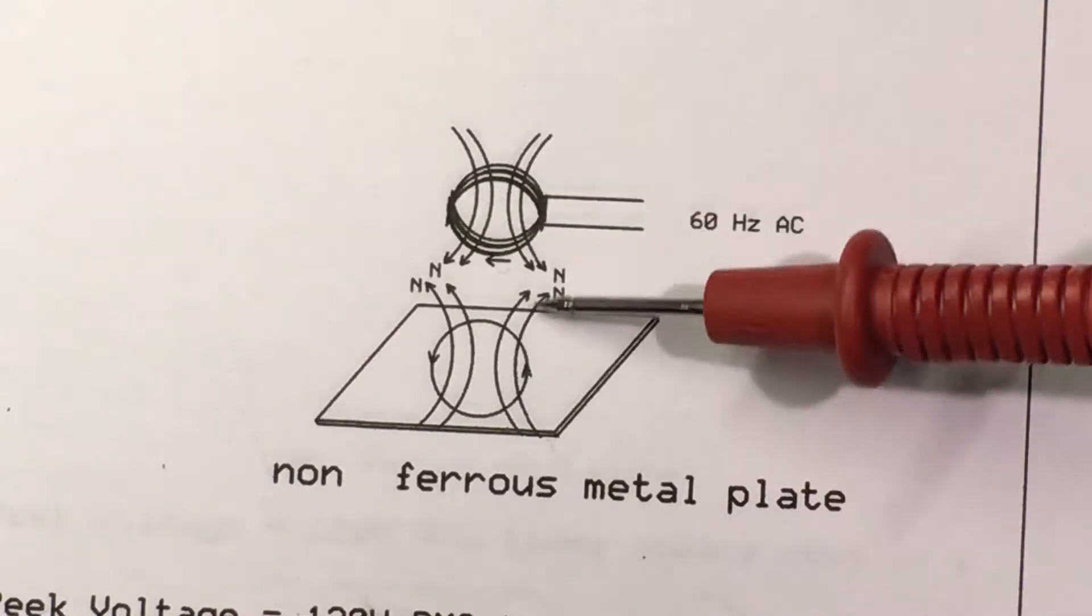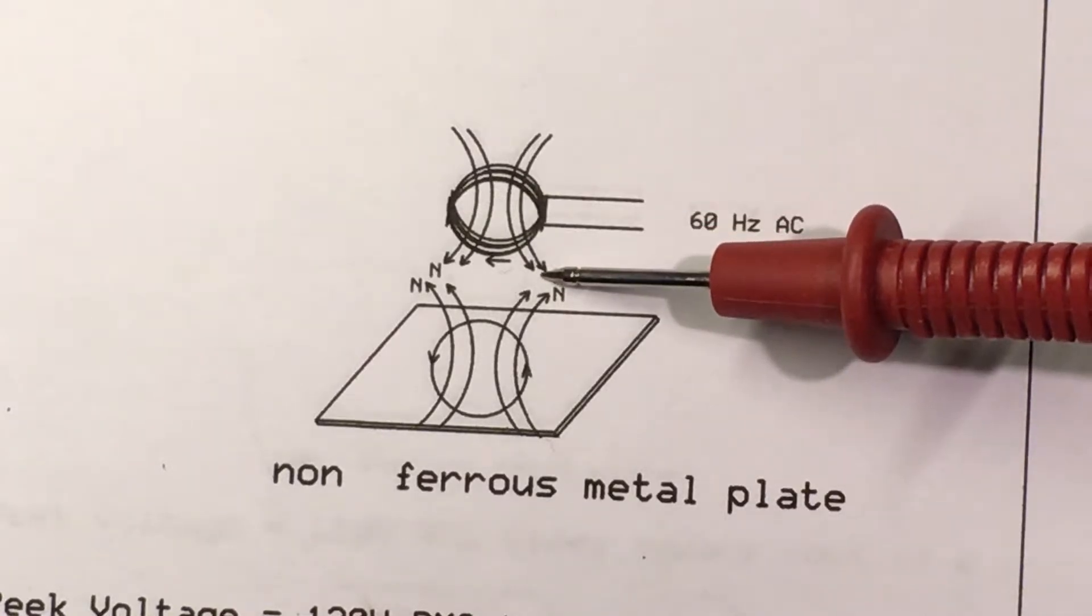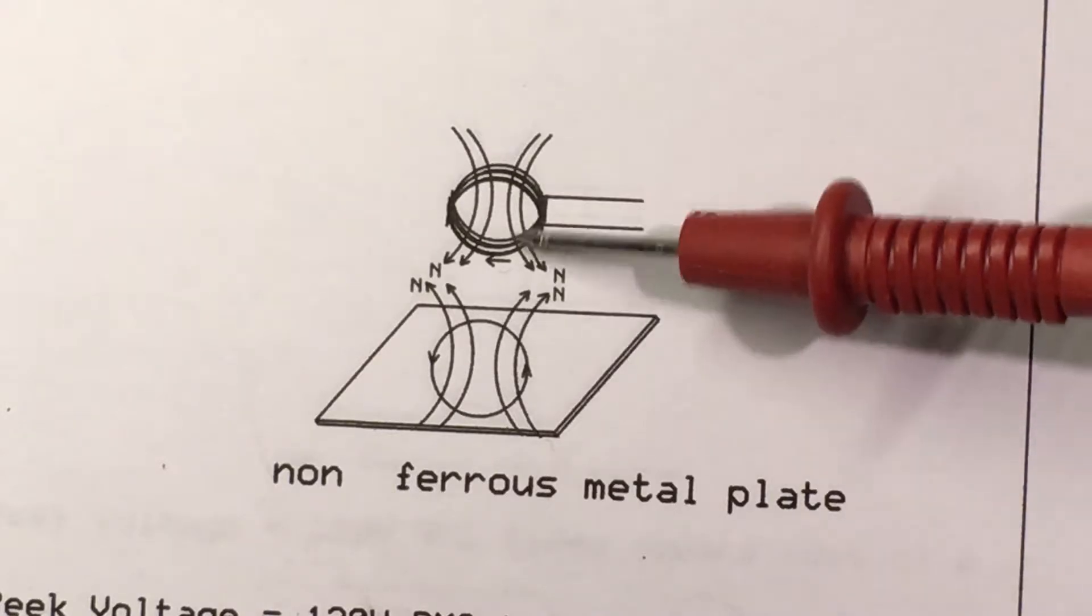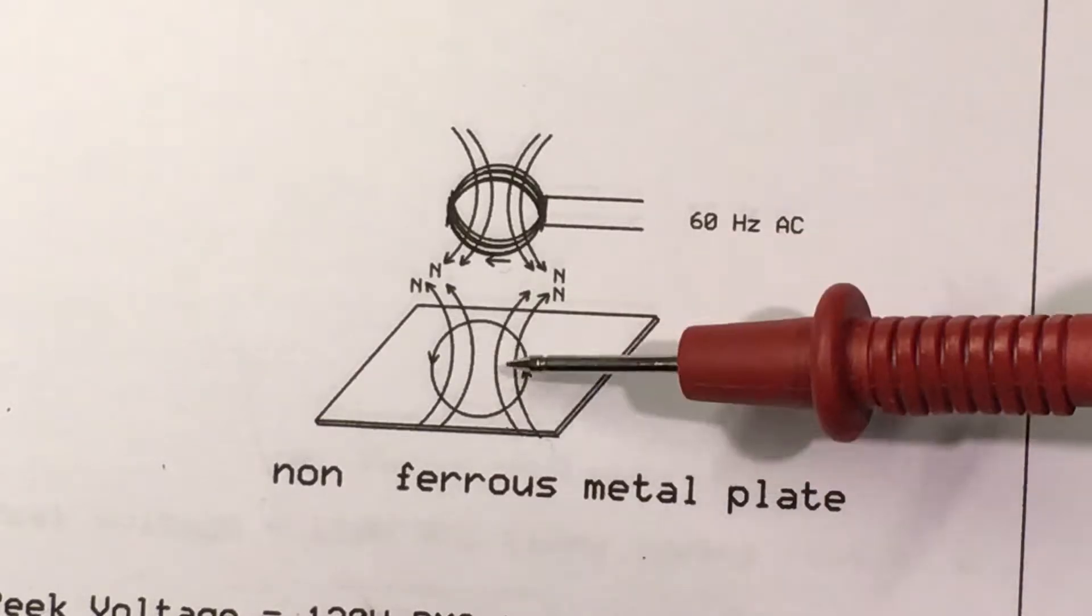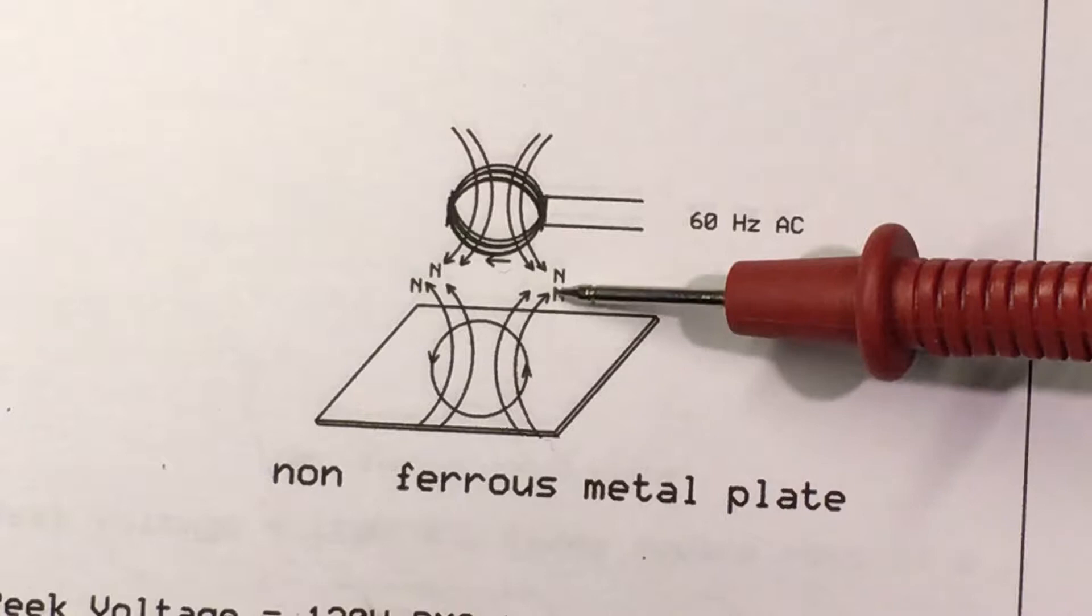...direction, we create a magnetic field with the north pole on the bottom here. That induces an EMF in this metal plate, this piece of aluminum, with the current going in the opposite direction, creating a north field up here.